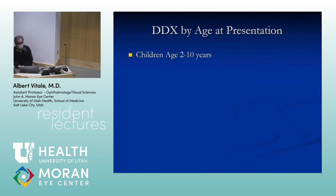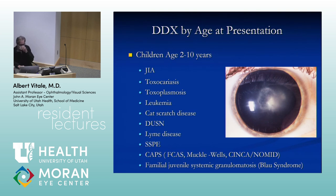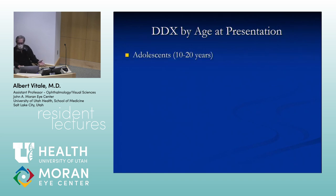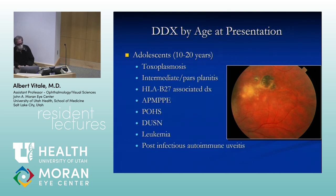Children between 2 and 10 years of age: the most common presenting diagnosis is JIA — white, quiet eye. There are also infectious and neoplastic things to consider. In adolescence, the differential is not very different from adults: toxo, intermediate and pan-uveitis, HLA-B27-associated disease, and HLA-B27 as a subtype of JIA, plus other infectious and neoplastic diseases.